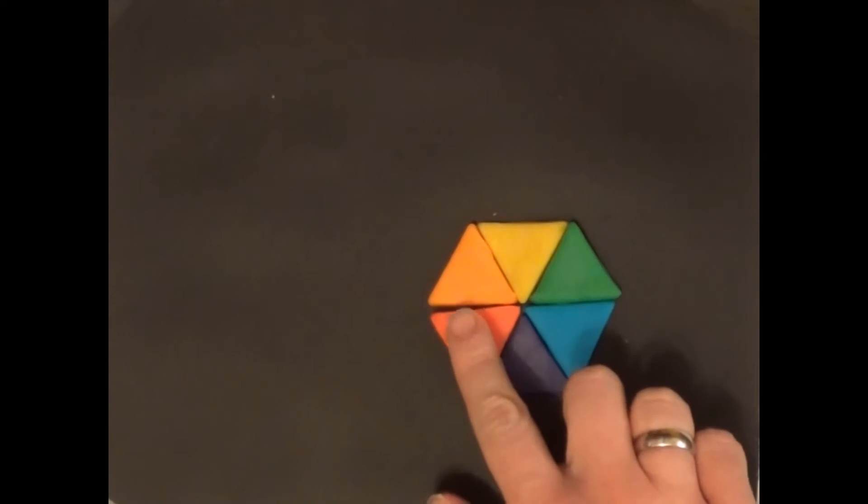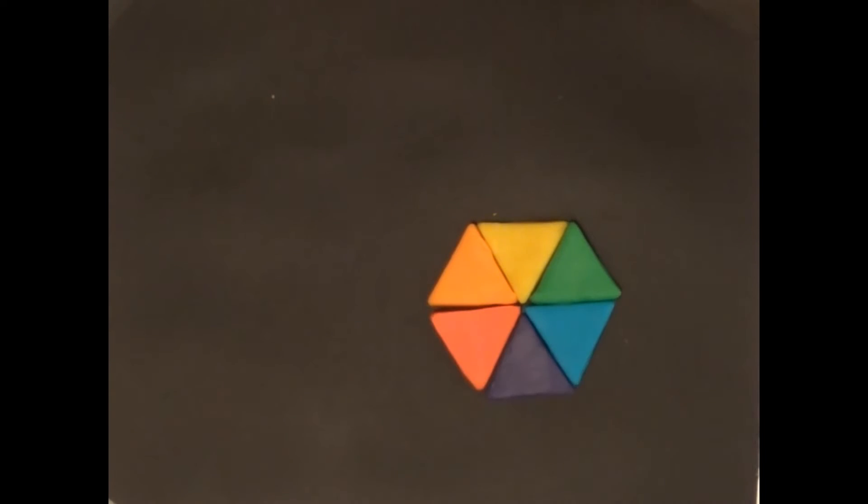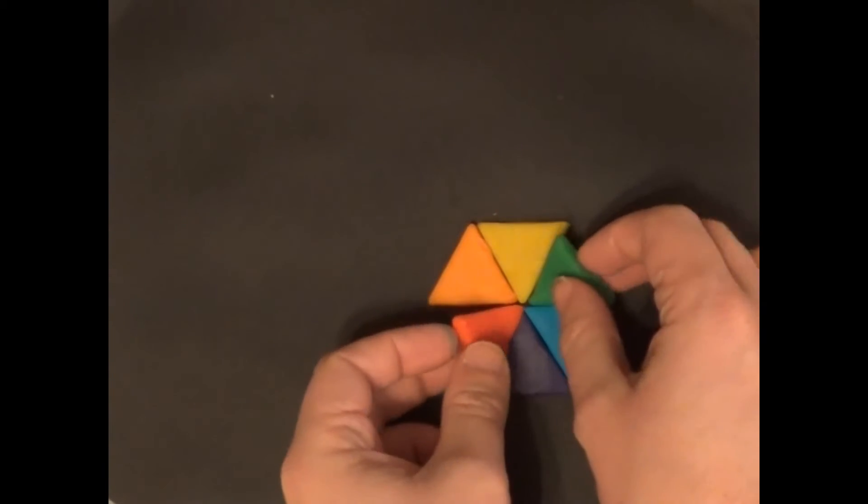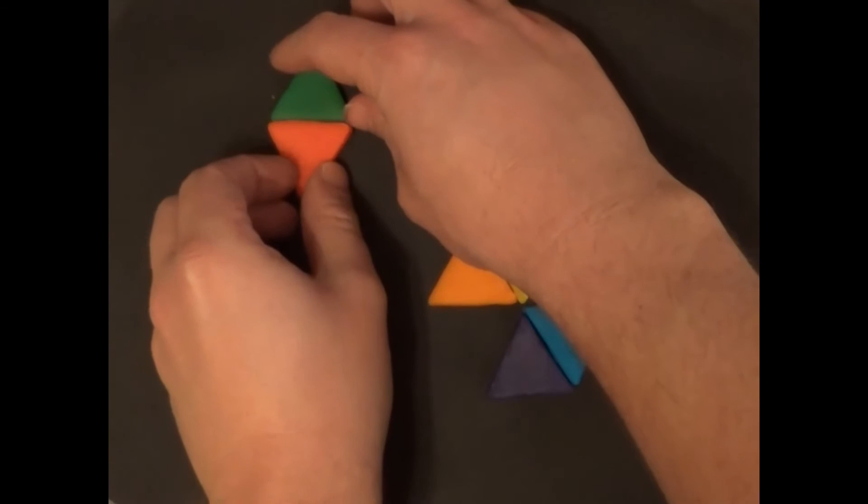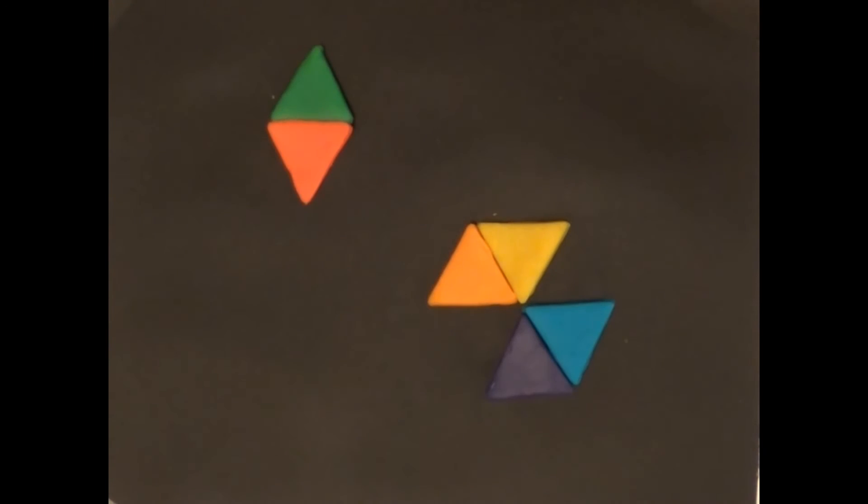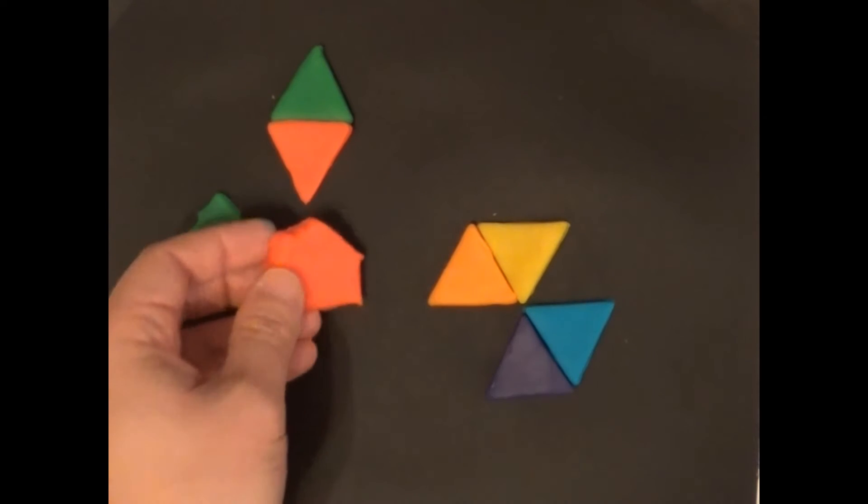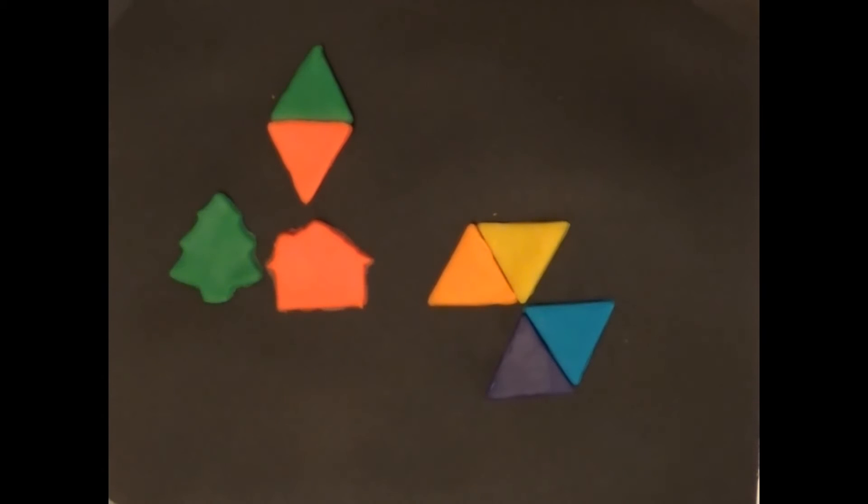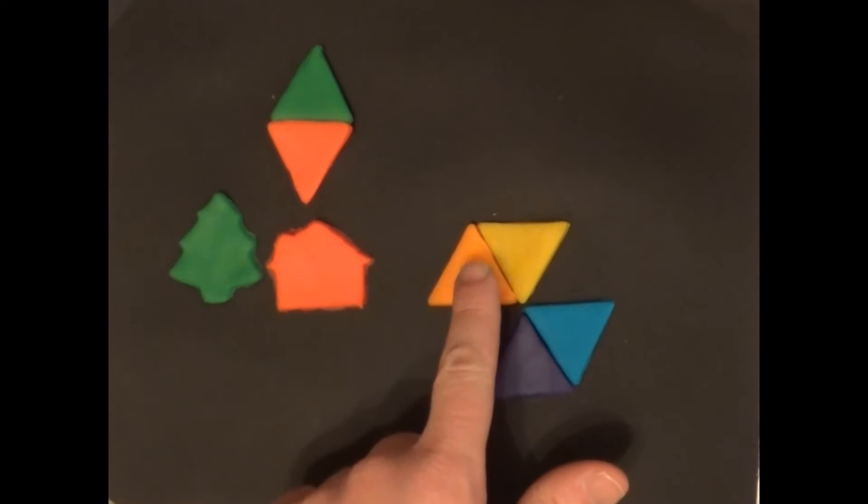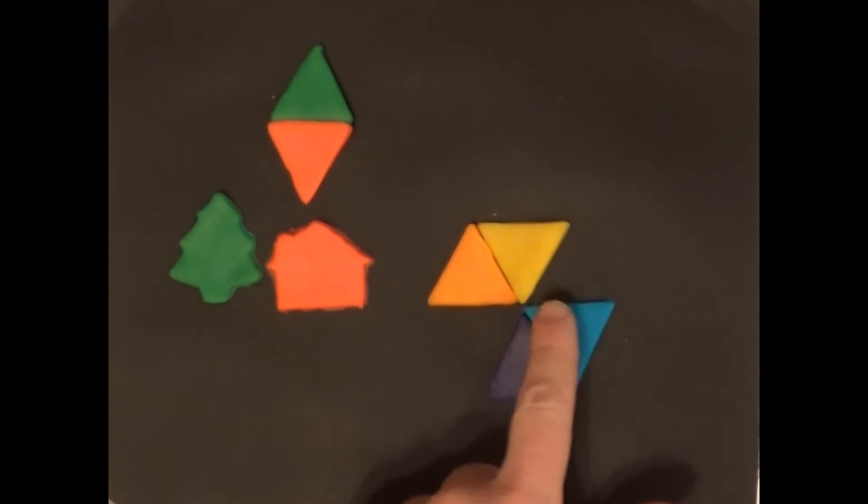So green is complementary to red. These two together are complementary, so I'll put these off to the side here. I've made some clay cutouts: a green Christmas tree and a red house. You can see that those are two complementary colors, so Christmas is formed by making complementary colors. And then orange and blue, these two are also complementary colors.